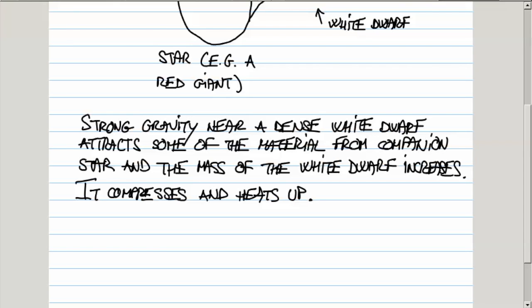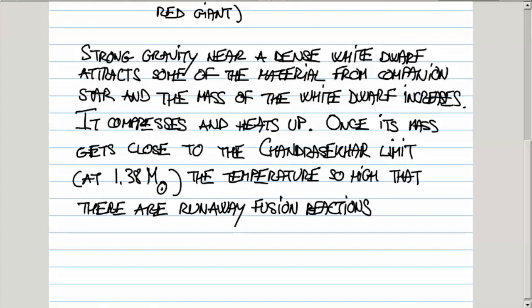It turns out when its mass gets to be close to Chandrasekhar limit, the actual value for that ignition is 1.38 solar masses. It's so hot that there are runaway fusion reactions. Although initially, the white dwarf didn't have enough mass to contract so that the carbon can start fusing into heavy elements,